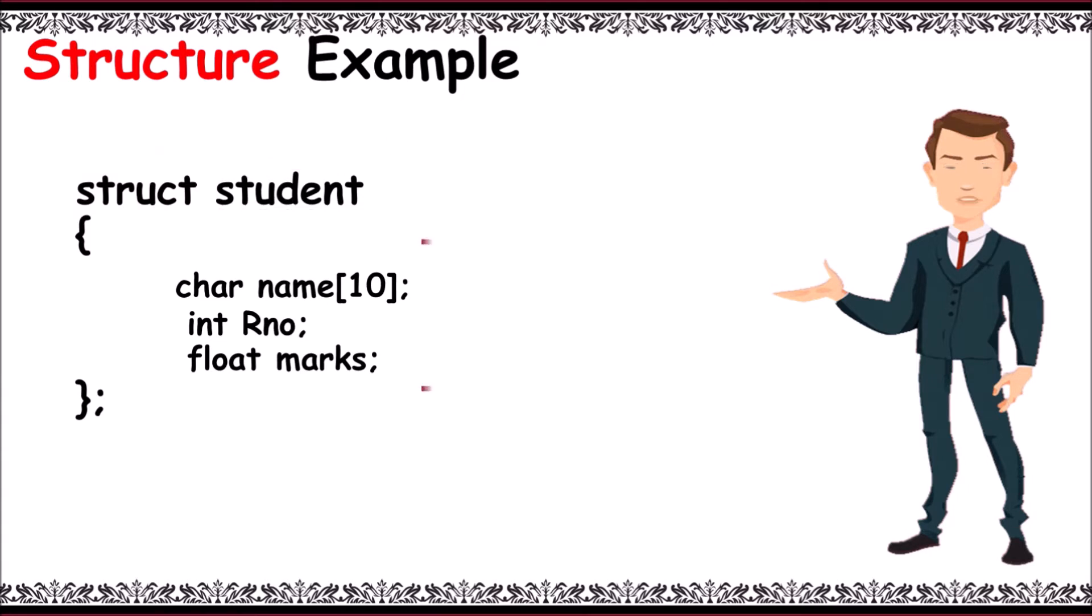char name[10], int rno, float marks are structure members. The structure block must end with a semicolon after the closing braces.